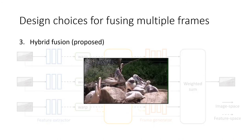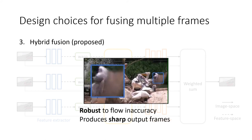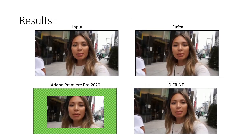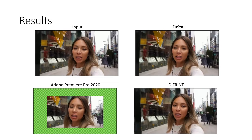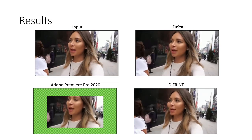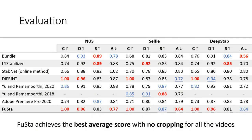The proposed hybrid space fusion method improves the sharpness of the output frame while avoiding ghosting and glitching artifacts. FUSTA does not suffer from aggressive cropping of frame borders like Adobe Premiere Pro 2020 and renders stabilized frames with significantly fewer artifacts than DIFRINT. We evaluate the proposed method with state-of-the-art video stabilization algorithms on three public benchmark datasets, and FUSTA achieves the best average score with no cropping for all the videos.